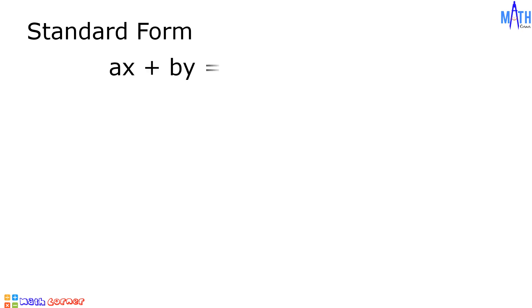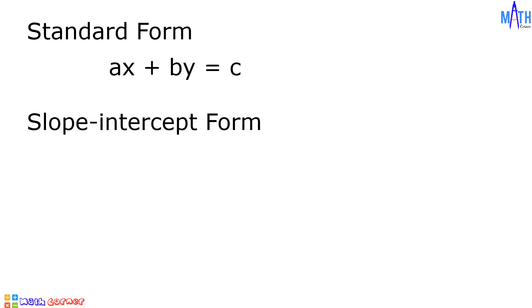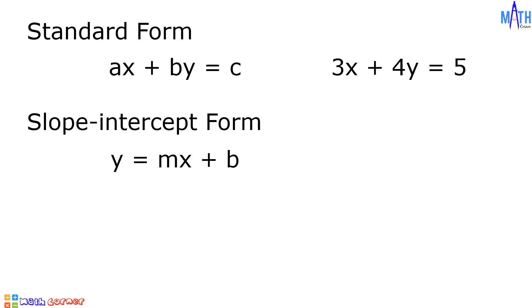The standard form of linear equation is Ax plus By is equal to C, while the slope-intercept form is Y equals Mx plus B. An example of a linear equation in standard form is 3x plus 4y is equal to 5, and an example in slope-intercept form is Y equals 4x plus 6.